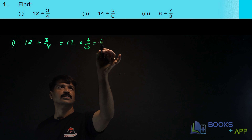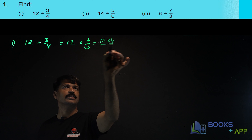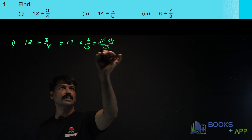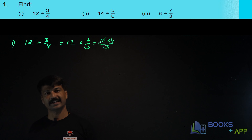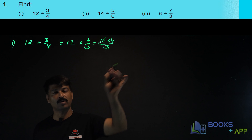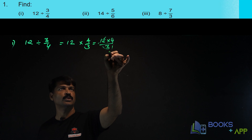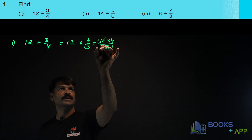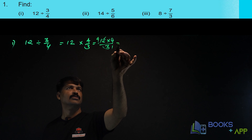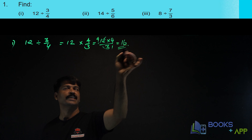So what is the answer? 12 into 4 divided by 3. 3 and 12 get cancelled — divide by 3. You can divide 12 and 3 throughout by 3. 3 by 3 is 1, and 12 by 3 is 4. So the answer is 4 fours are 16.